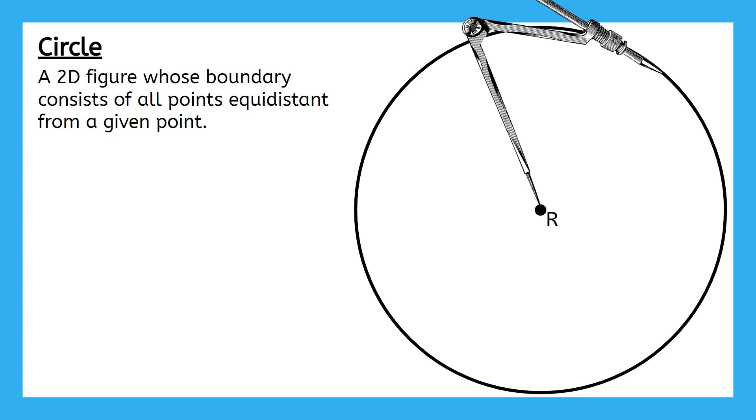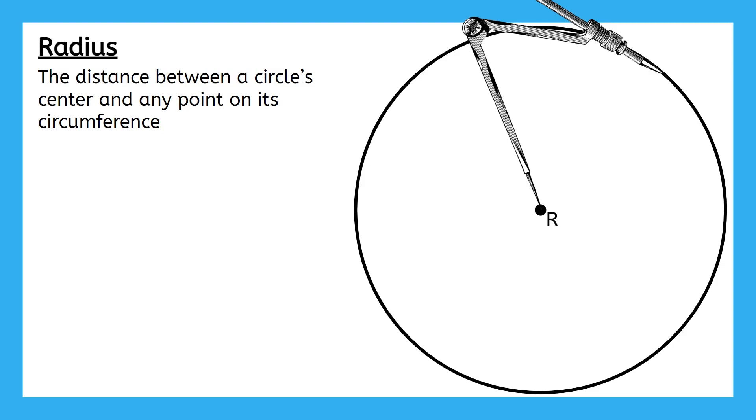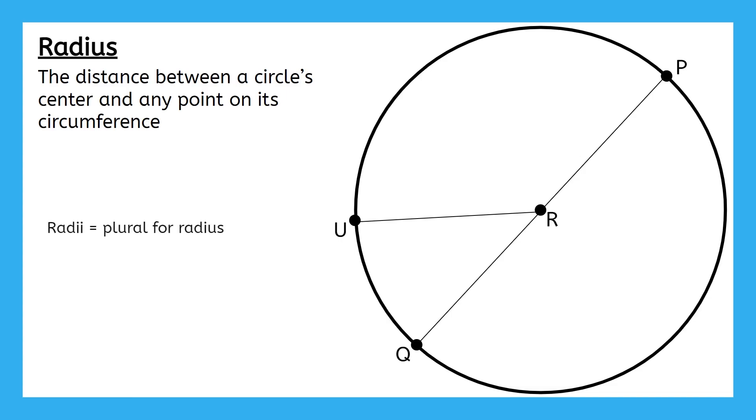The distance between both tips of the compass is also known as the radius of the circle. The radius is the distance between the circle's center and any point on its circumference. In this circle, we can say that segment RP is a radius. We can draw in a radius anywhere we want to as long as one endpoint of the radius contains the center and the other endpoint is on the circumference, like segment RU or segment RQ.